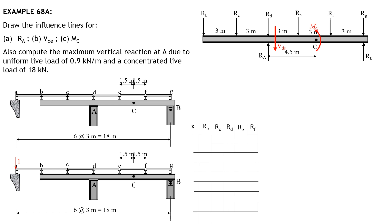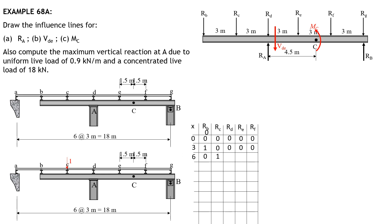When the unit load is acting at G, if you want to derive RA, the moment arm of the unit load at G will be zero at B, so RG is not included. When x is zero, everything — RB, RC, RD, RE, RF — is zero. When x is 6, the unit load is at C; everything is zero except RC is 1, because the unit load is over panel point C, so the reaction at C should be 1 and the rest will be zero.